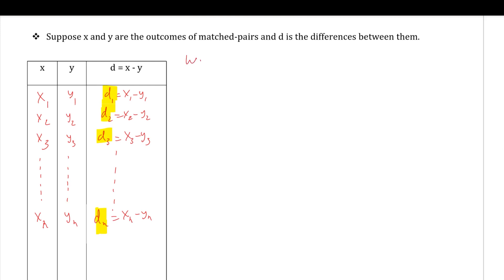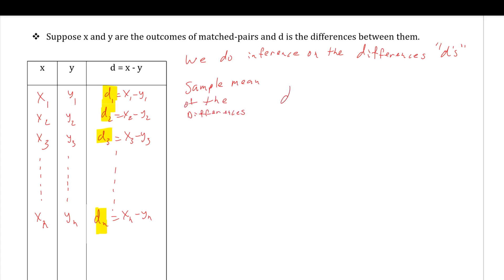We do inference — that's confidence intervals and hypothesis testing — on the differences, the d's. From that difference list we can come up with the sample mean of the differences, and we'll call that d-bar, which would be d1 plus d2 plus d3 plus ... plus dn, all divided by n.